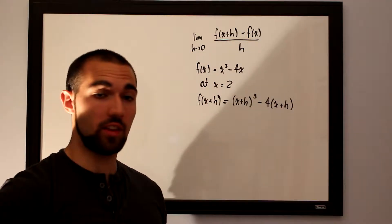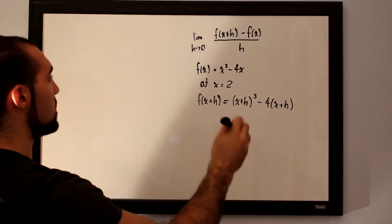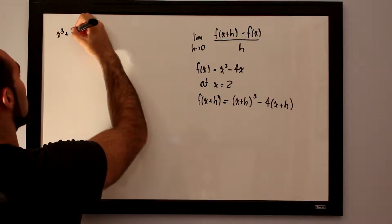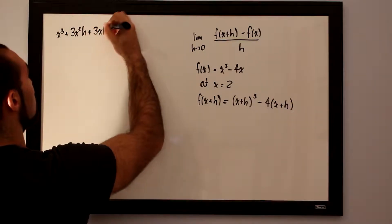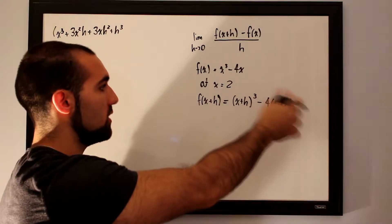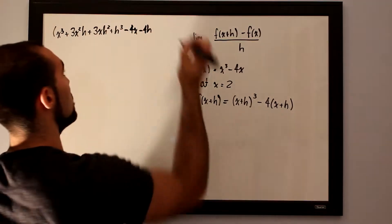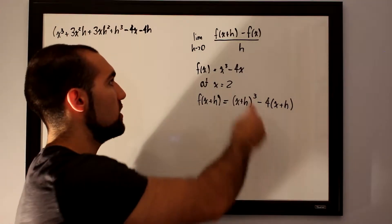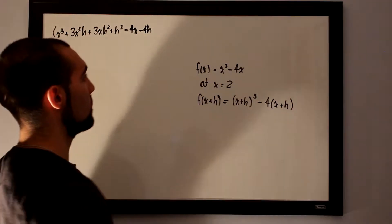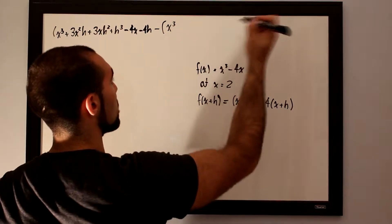Distributing, x plus h cubed expands as x cubed plus 3x squared h plus 3x h squared plus h cubed. Then we distribute the 4, giving minus 4x minus 4h. Afterward, we subtract off the initial function x cubed minus 4x, so we open brackets and write minus the quantity x cubed minus 4x.